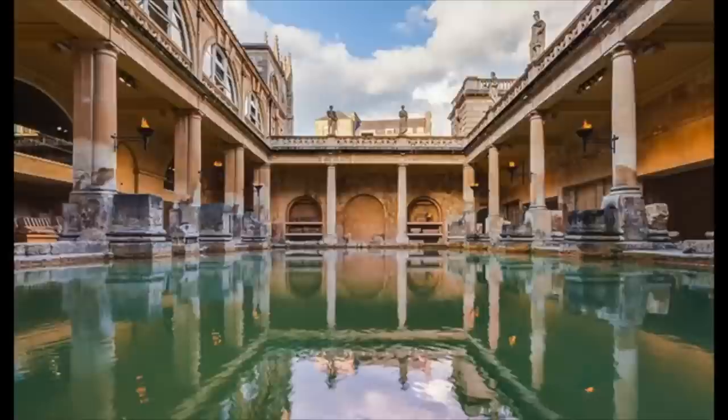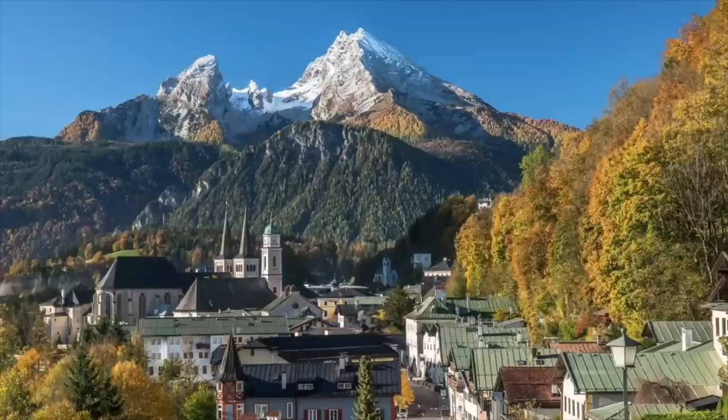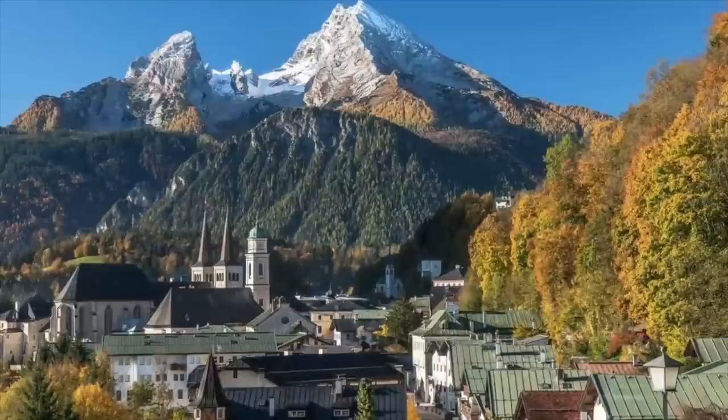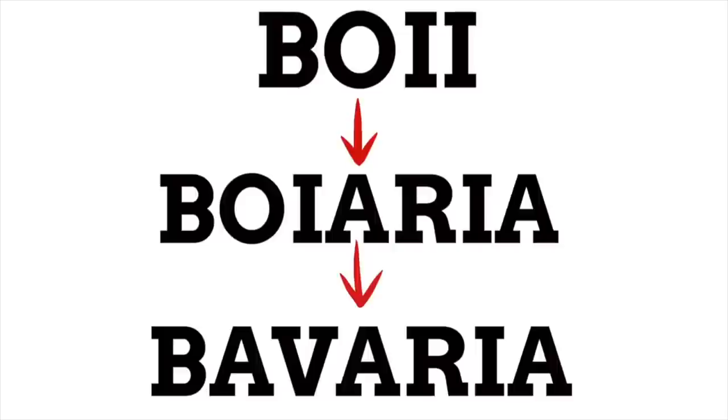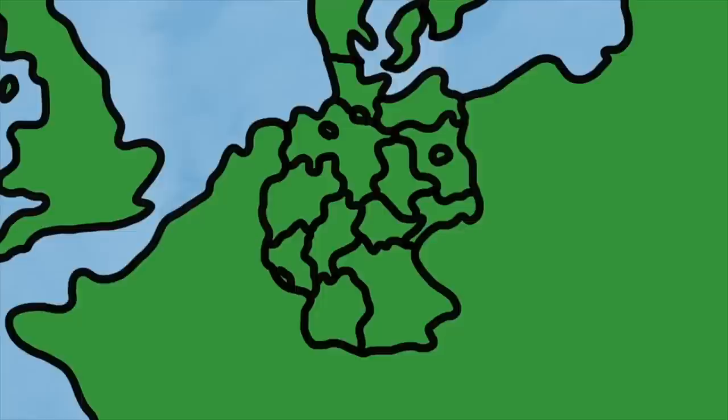Finally, Germany's largest and perhaps most well-known state — minus the city-states — is Bavaria. The word conjures up lederhosen, beers, and beautiful scenery. Once again we have a group of people to thank for the name — this time the Celtic Boii people, which turned into the Latin Boiaria, and eventually into Bavaria. So whether you're drinking beers in Bavaria or eating hamburgers in Hamburg, now you have a better idea of how the states of this wonderful nation got their names.